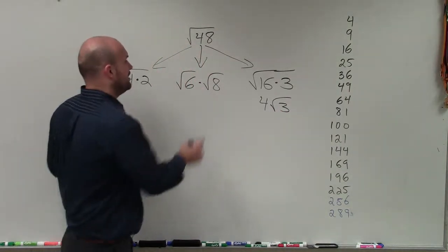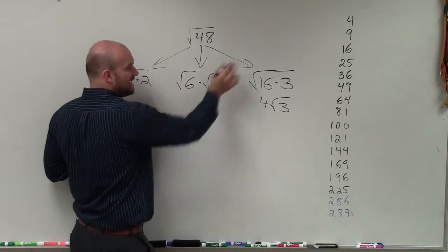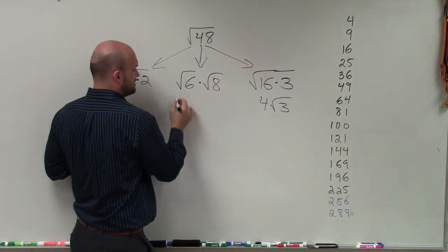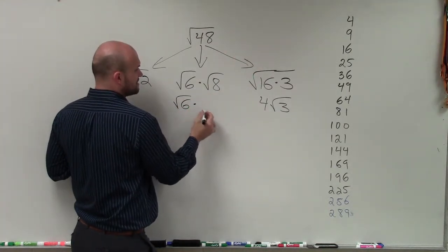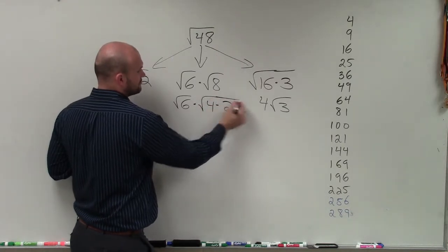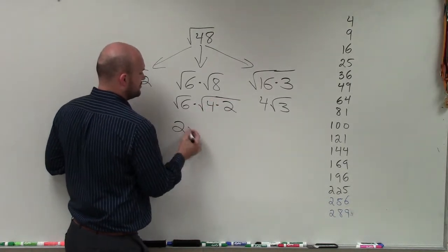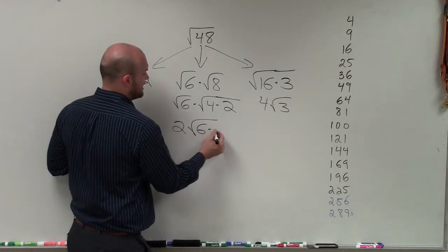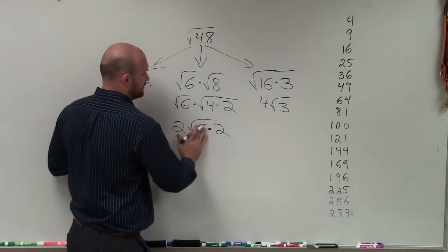Let's just pretend you did this one. I see square root of 8. I can break down again with the square root of 4. So I can say square root of 6 times square root of 4 times 2. Then I can say that's 2 times the square root of 6 times 2, which is 12.